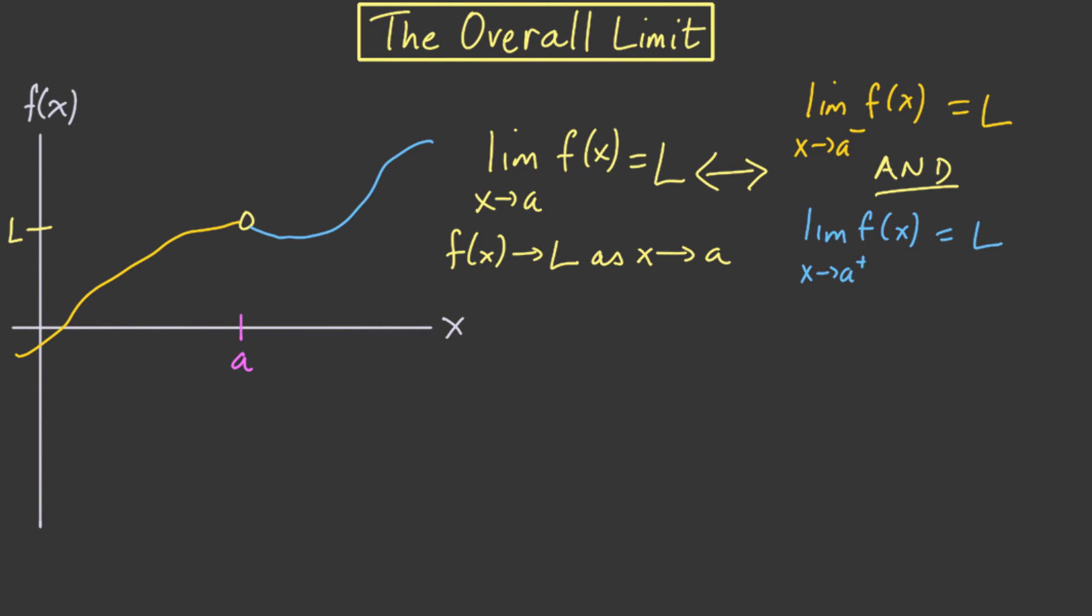But remember, limits only care about values of x that are close to a, but not equal to a. So for the sake of the overall limit, it's not going to matter whether we have a dot for f(a). We could fill in this circle, or we could put a dot down here, or we could just not have a dot if f(a) doesn't exist. Whatever. It won't affect the limit.